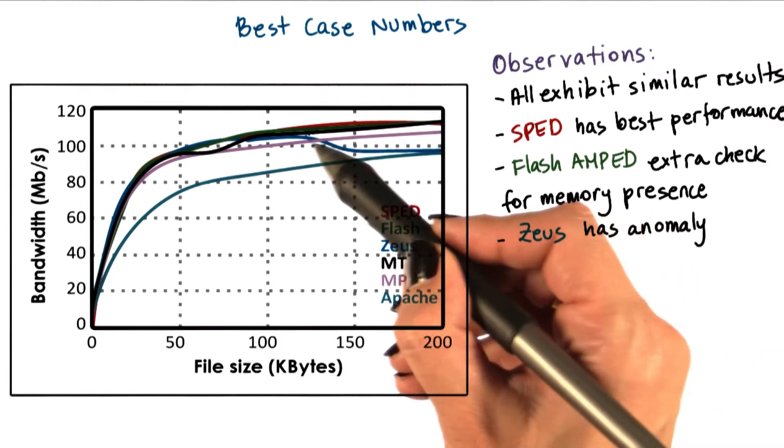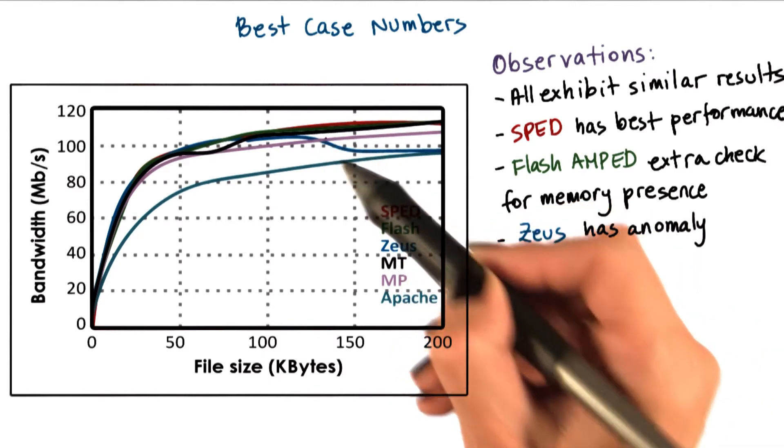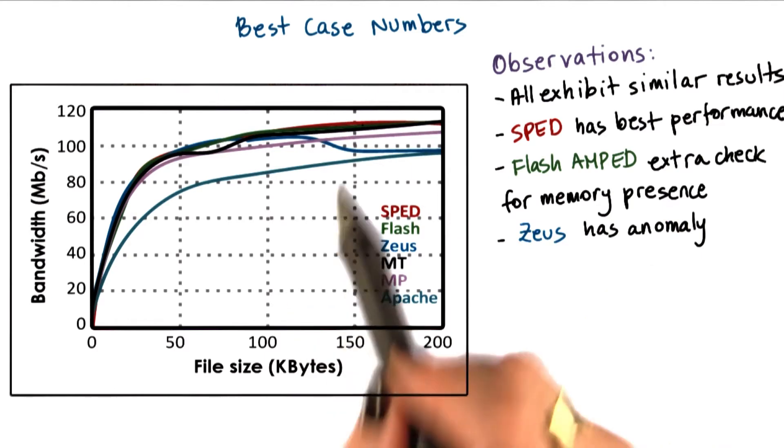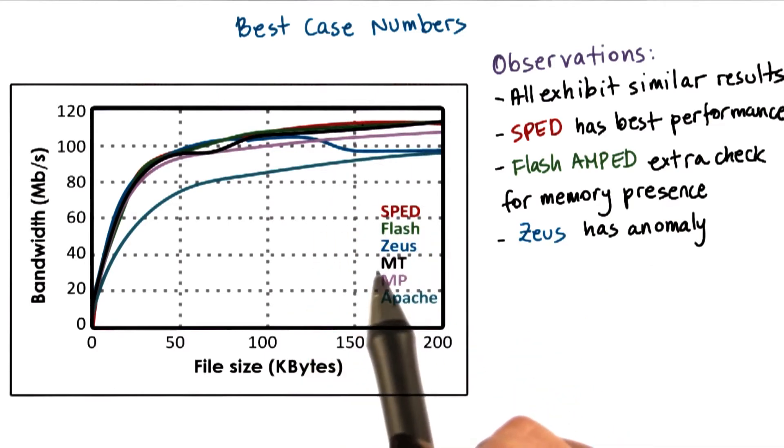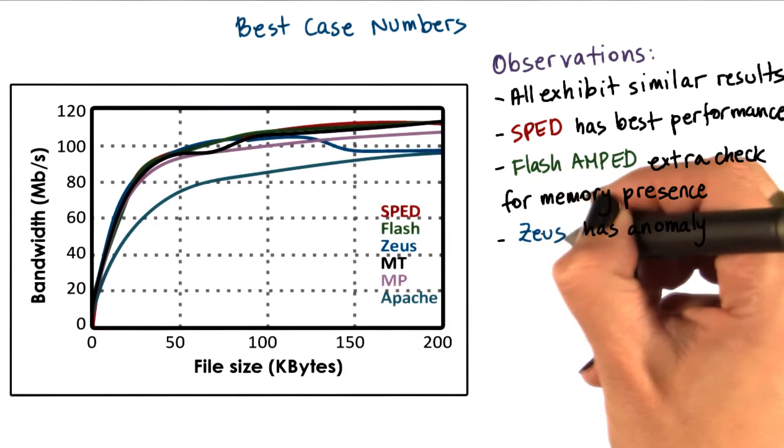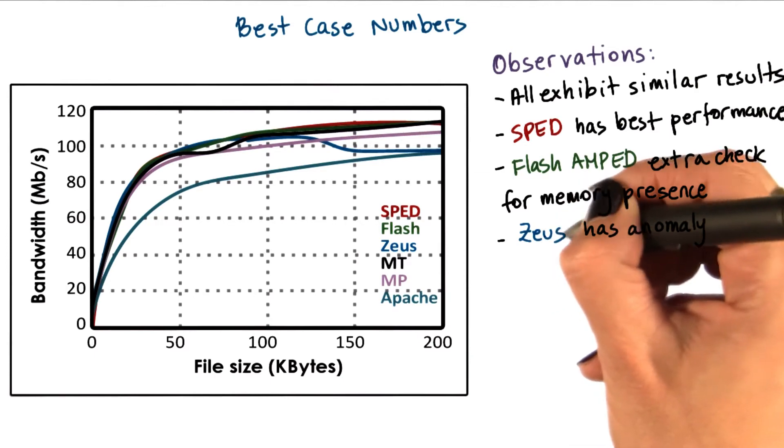Zeus has an anomaly. Its performance drops here a little bit. And that has to do with some misalignment for some of the DMA operations. So not all of the optimizations are bug proof in the Zeus implementation.